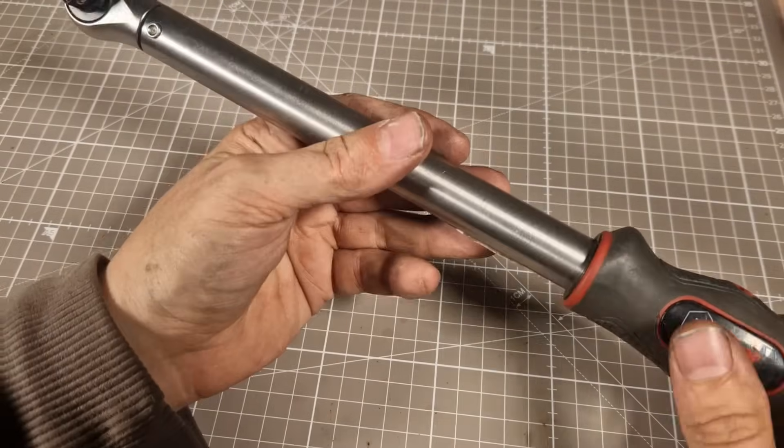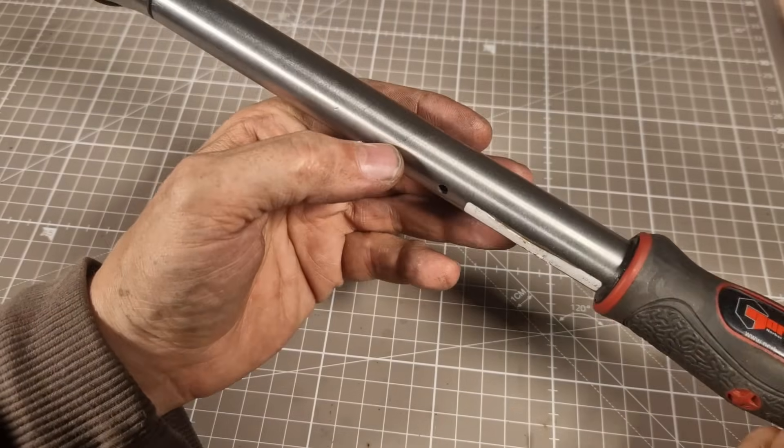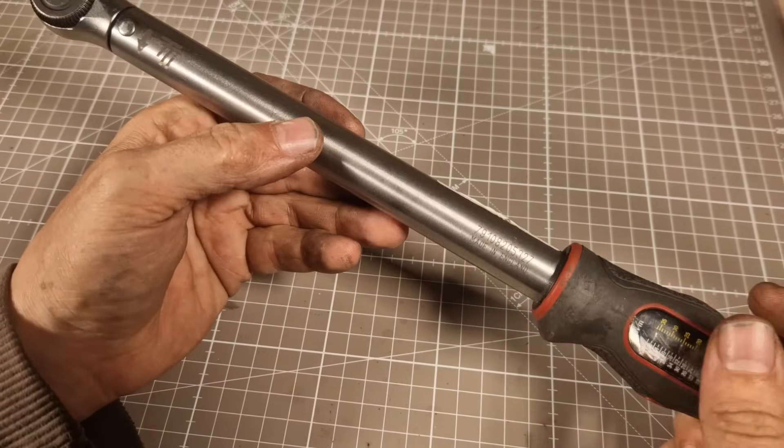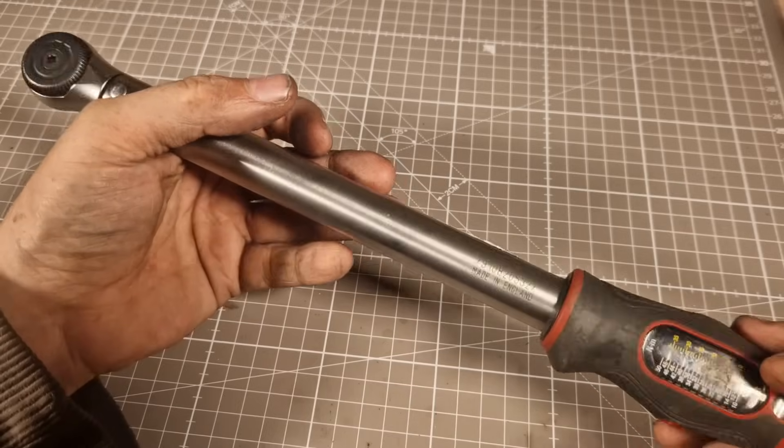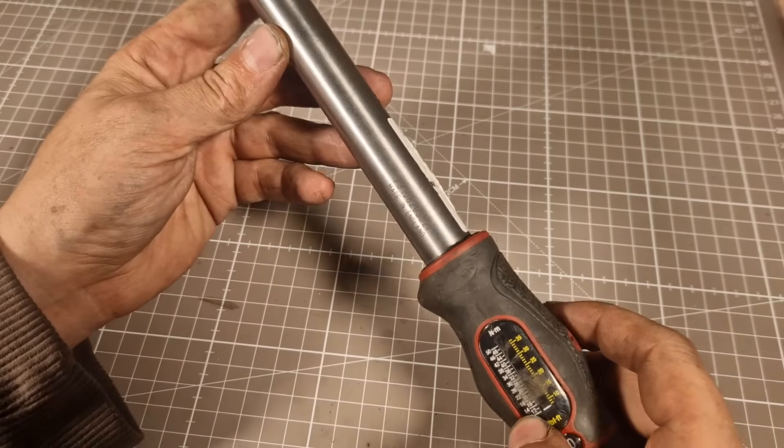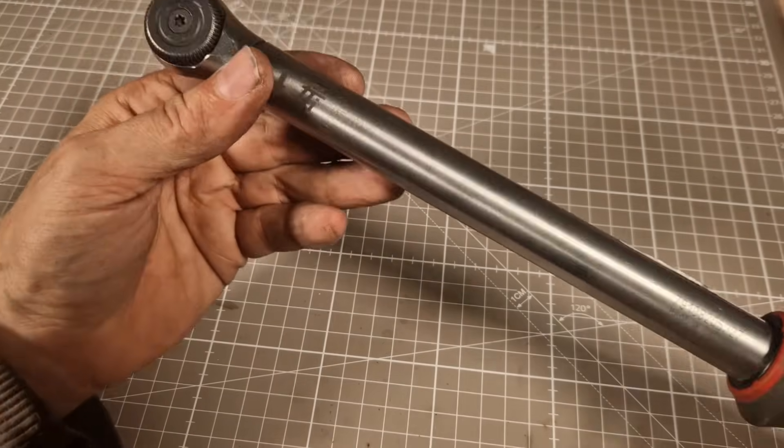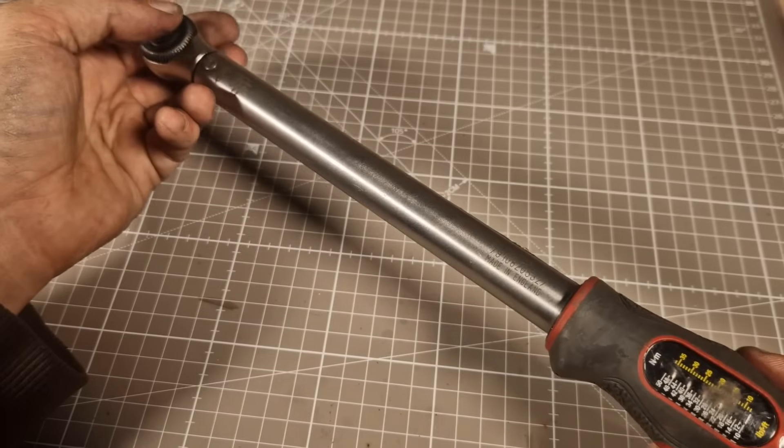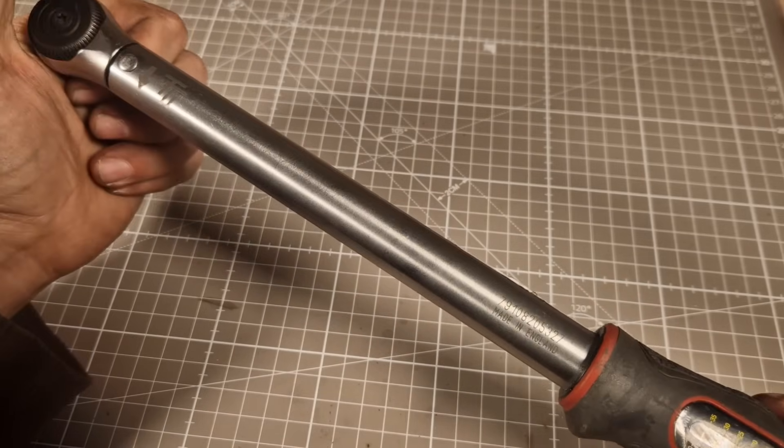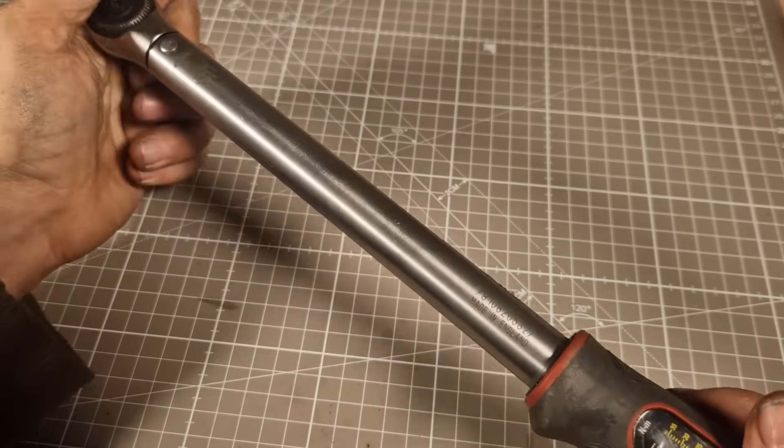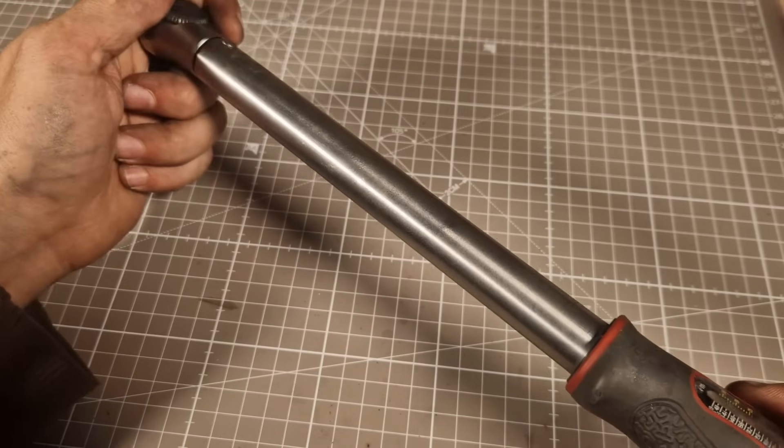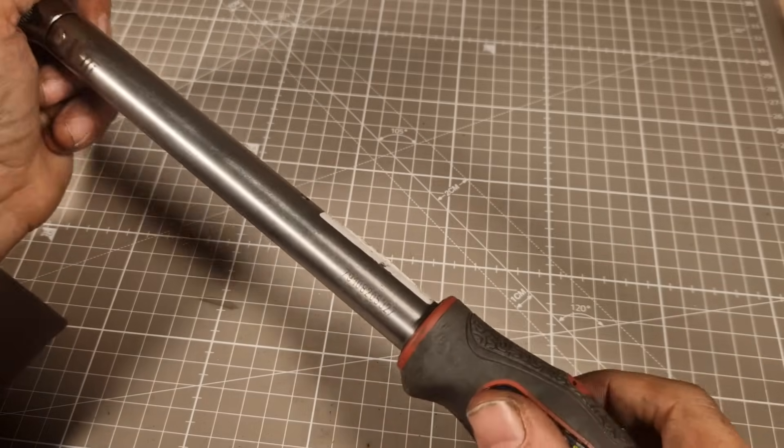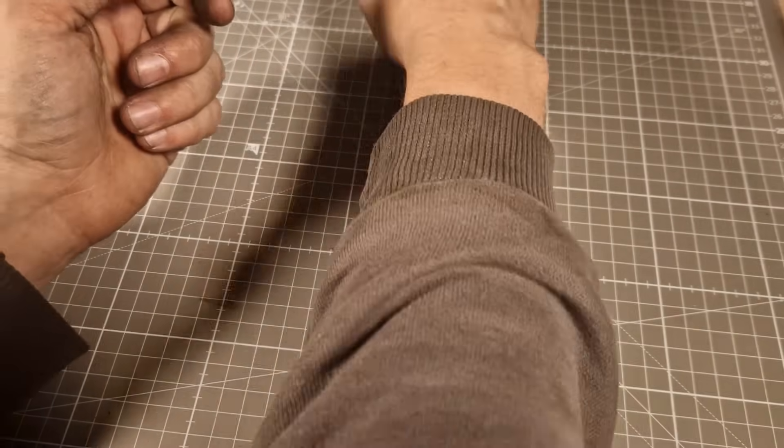Torque wrenches, this is my Norbar torque wrench. You might have seen a lot of these things before but this is more for people who haven't. This is good, it goes from 10 to 50 newton meters, this is the diddy one, the TTI 50. I've had this maybe five years now. We're going to get the torque tester out and test it, see what it actually says.